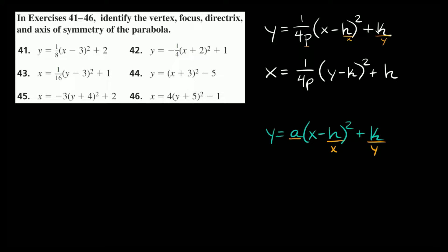If you can memorize this equation you'll be able to come up with the other one. When you have x is equal to something, it's the exact same but just flipped. For y equals, you have y on the outside and x inside the parentheses. But for x equals, you have x on the outside and y inside the parentheses. The h and k are also flipped — so we have k and h instead, meaning the x coordinate is on the outside and the y coordinate is on the inside.